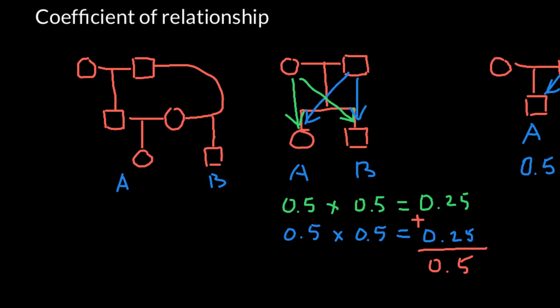We see that individual A and B are related through a common ancestor. In the first example, this common ancestor is the grandfather of individual A and the father of individual B. So this individual would be the common ancestor. Individual A would share 0.25: 50% inherited from his father, and his father also inherited 50% from his father, giving 0.25.